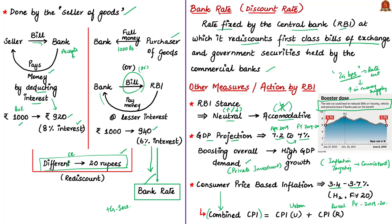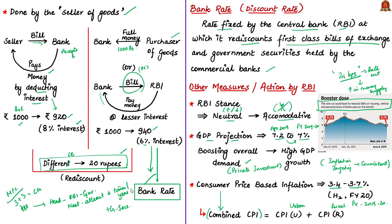The Monetary Policy Committee is an executive body consisting of six members — three from RBI and three nominated by the central government — headed by the Governor of RBI. This committee should meet at least four times a year to determine the policy interest rate required to achieve inflation targets. At present, the MPC meets and releases policy statements every two months. This is the second meeting of the MPC for this financial year.